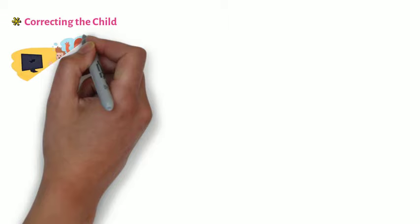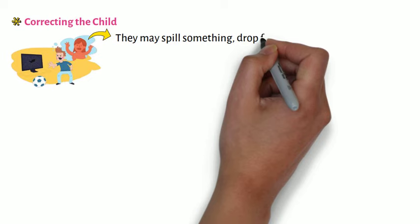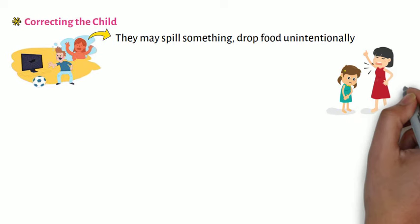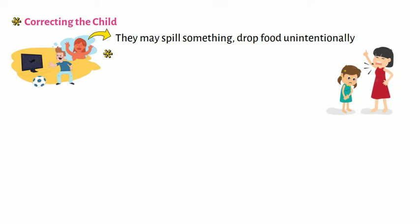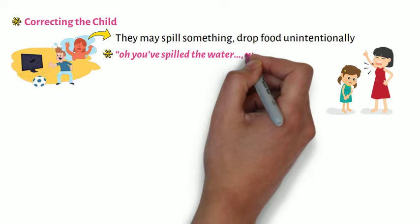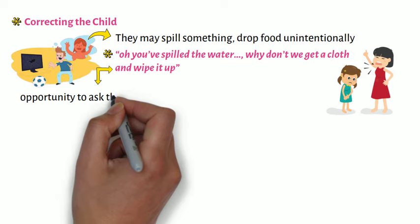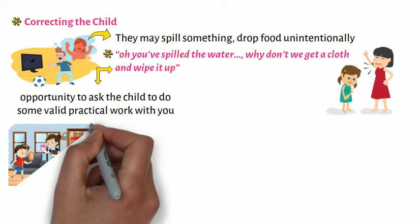On correcting the child. Children make mistakes — they may spill something, drop food unintentionally, and so on. There is no need to raise your voice in situations like those. Instead, calmly recognize the mistake, saying, for example, 'Oh you've spilled the water, why don't we get a cloth and wipe it up?' This is an opportunity to ask the child to do some valid practical work with you.